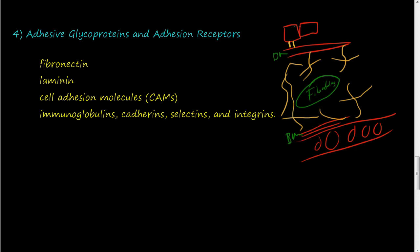The adhesive glycoproteins allow the epithelial cells to attach to the basement membrane. They also allow cells to attach to each other. And finally, they allow these extracellular matrix components like proteoglycans to attach to each other too. For the receptors, we have these CAM adhesion molecules, cell adhesion molecules.